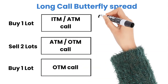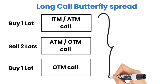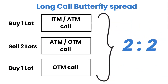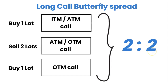The second leg begins the defense. The third leg is buying one lot of an OTM call. Net to net, it becomes a two-to-two position wherein you have two lots of buy position and two lots of sell position. Thereby, there is no unlimited loss in this strategy. This is called the butterfly spread — a two-to-two spread where you buy one in-the-money lot, sell two out-of-the-money, and buy one more as a cover.